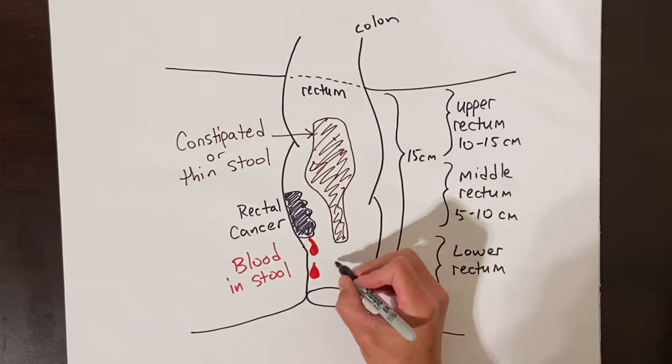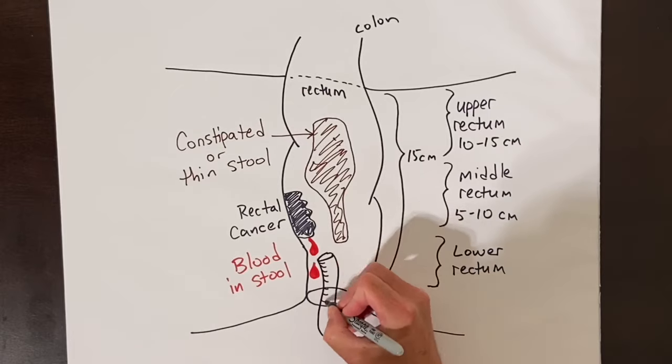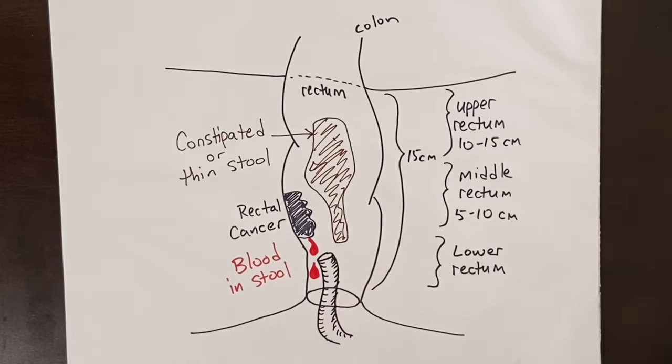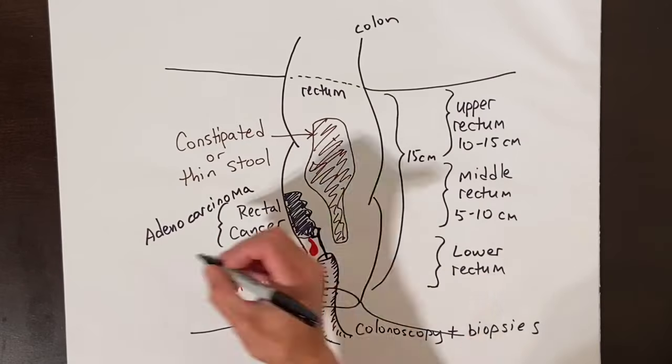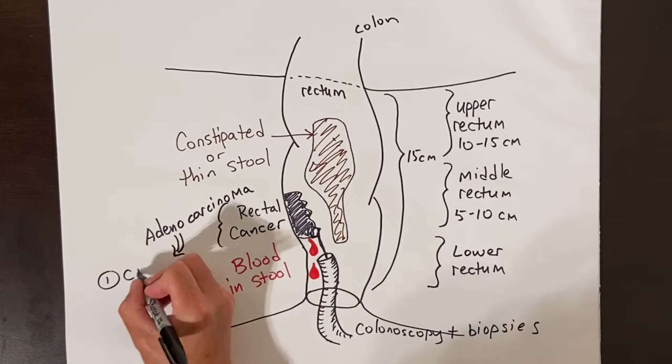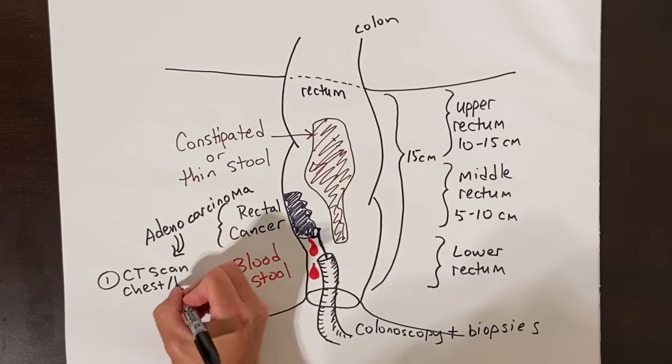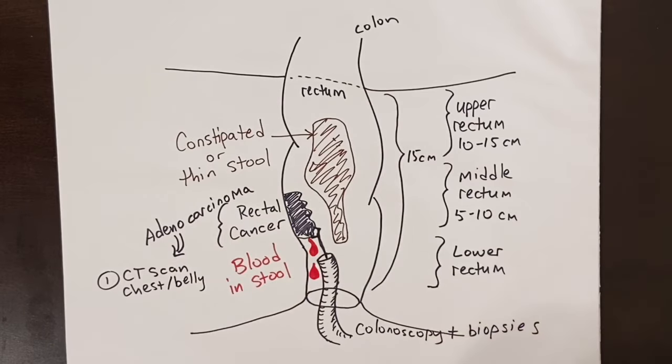A doctor usually confirms the diagnosis of rectal cancer by doing a colonoscopy with a camera and taking a biopsy of the mass. Almost all rectal cancer is the type called adenocarcinoma. Once you are diagnosed with rectal cancer, we usually do a CT scan of the chest and the belly to be sure the cancer has not spread. Common places to spread are the lungs and the liver.